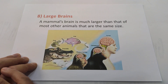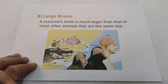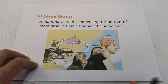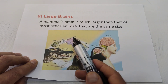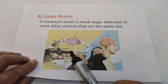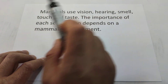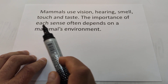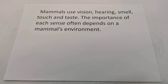The eighth characteristic is that mammals' brains are much larger than those of most other animals of the same size. For example, the human brain is larger than a fish brain or crocodile brain. Mammals use sensory organs — vision, hearing, smelling, touching, and taste — to understand their environment.